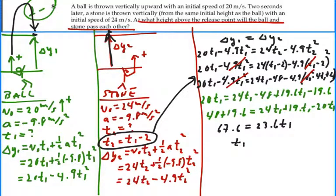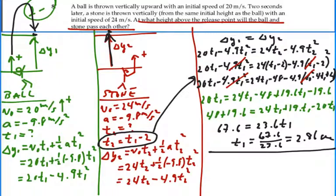So t1 will equal 67.6 divided by 23.6. What is that? 67.6 divided by 23.6. 2.86 seconds. So according to t1, the ball and the stone will pass each other after 2.86 seconds. Nice to know. We've always wanted to know that, but we need to know how high that is. And so we'll look at displacement delta y1, because that's using t1.